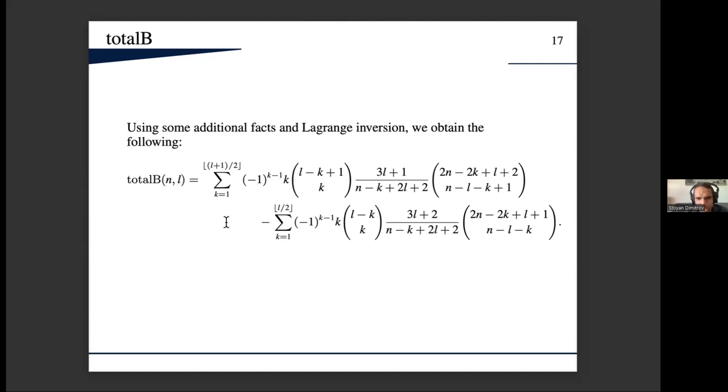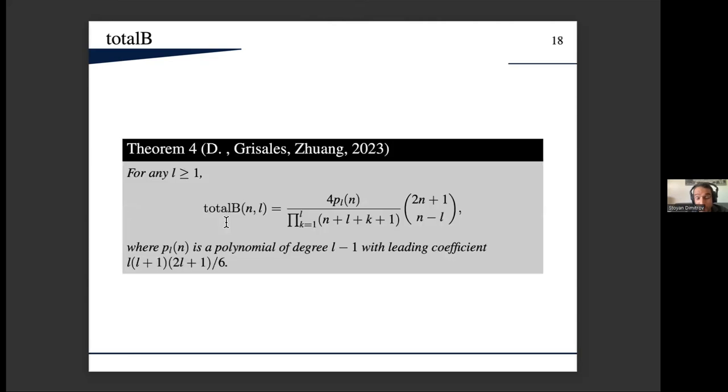However, we want to compare this with total D, and this form of this summation cannot help much. So we needed to rewrite this, and we managed to do that. We wrote it in that way. This is pretty much like what we have for total D. The problem is that here in the numerator, this coefficient of this polynomial p_l depends on l. This is indeed the problem because, okay, for constant l this would work, but we want l which depends on n. So we needed to use a different form for total B.